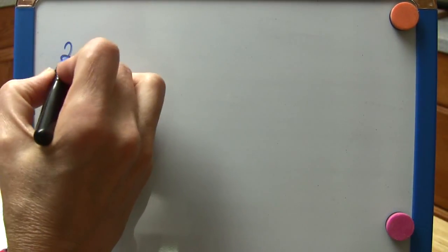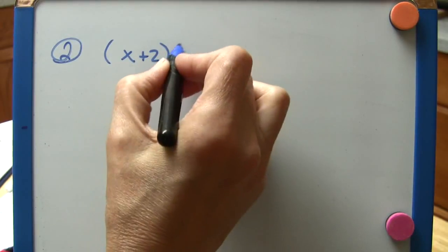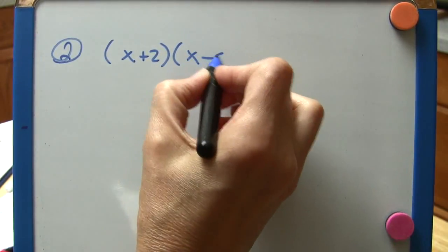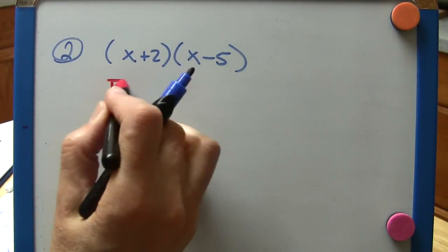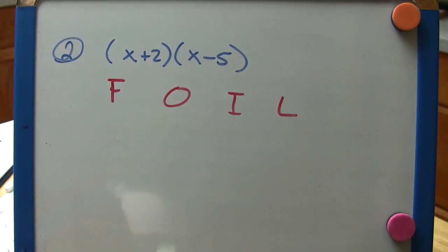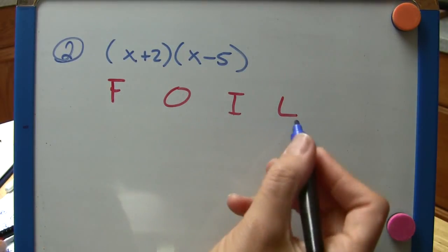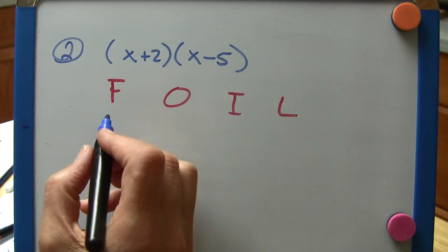For another example here, we'll take x plus 2 times x minus 5. And here again we can write out FOIL. Until you become very comfortable with it, that's a good way to learn not to miss any of the multiplying you need to do here.